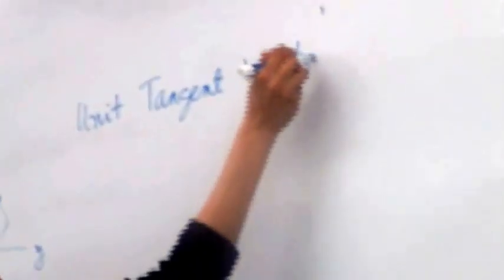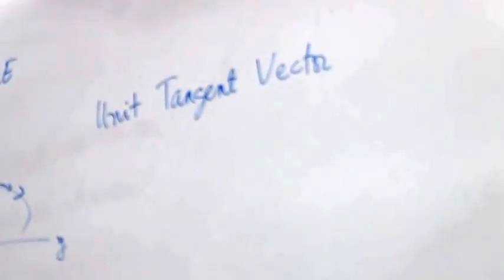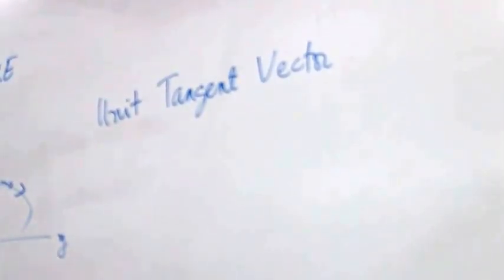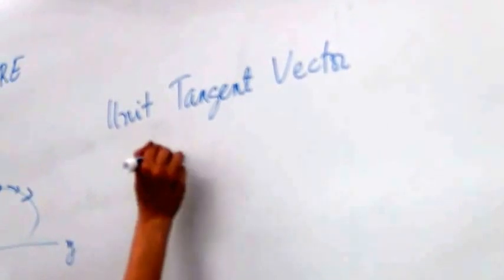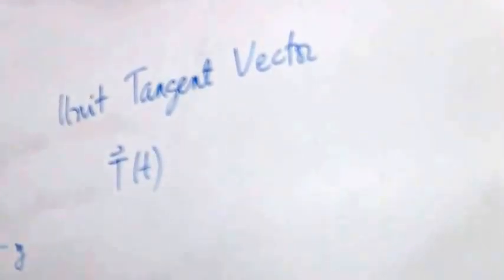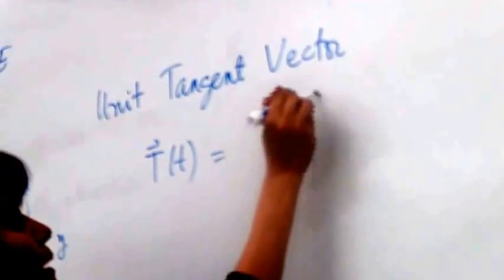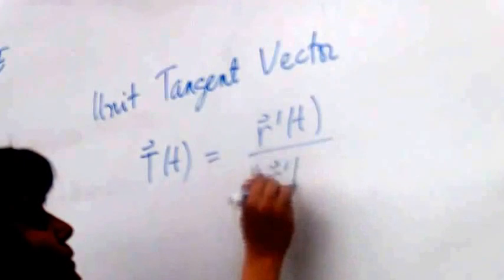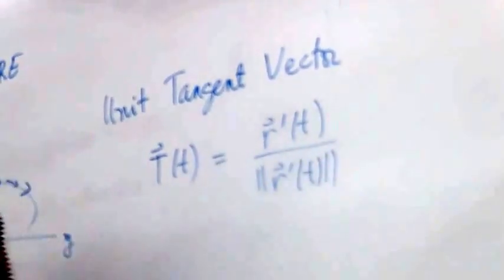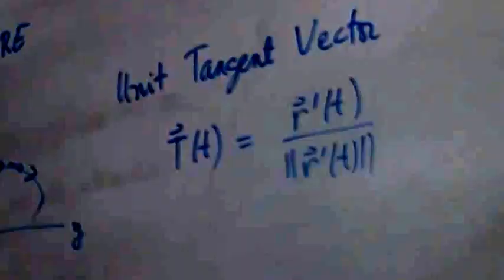For this kind of analysis, we need two unit vectors, and maybe I'll explain next meeting why we need them. The first is the unit tangent vector, which we denote by T of t. It's defined as R prime of t over the magnitude of R prime of t. R prime is tangent to the curve at the point, and we just want to make its length one — unit means magnitude one.